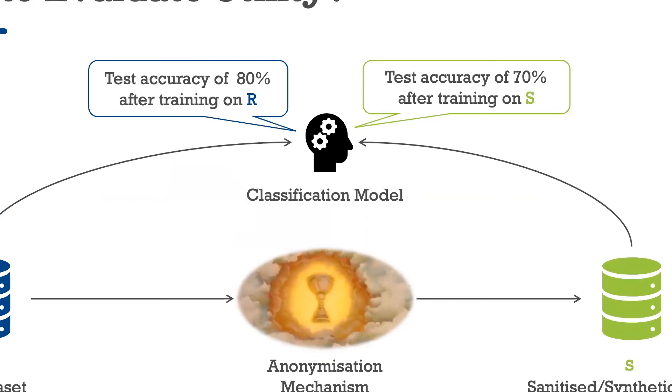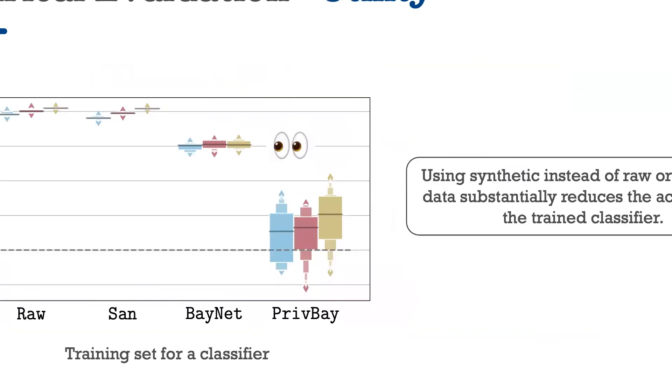So, analogous to the question we asked to assess the privacy of synthetic data publishing, the utility side of our framework tests whether an analyst who receives S instead of R can still conduct their analysis equally well. To do so, we define a utility function, for instance, a simple machine learning task and test how much training the model on S reduces the test accuracy compared to model trained on R.